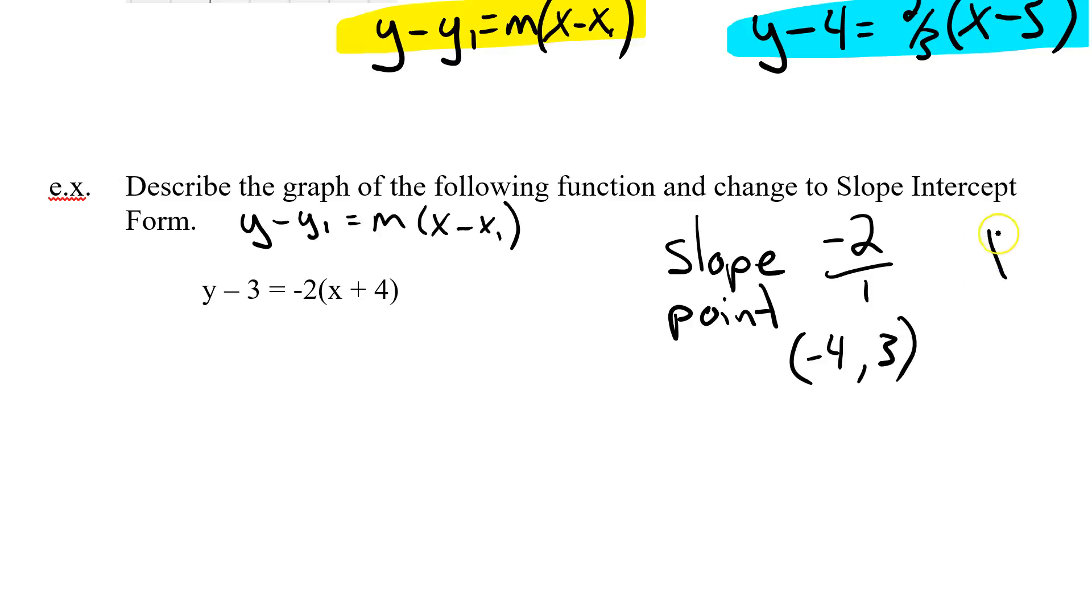Now I want to change this into slope-intercept form. Now I'm going to change to a green marker here. Slope-intercept form, if you remember, has a generic form of y equals mx plus b. So I'm going to manipulate this until I only have a single y, a single x, and a plus b. So the first thing I do when I start here is I have to distribute the negative 2 times each idea inside the brackets. So I get y minus 3 here, because I'm not going to touch anything with that, equals, well, negative 2 times x is negative 2x. Negative 2 times positive 4 is negative 8.